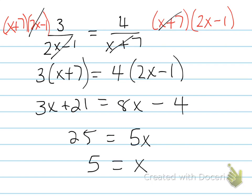So that's the solution. You can also state your non-permissible values: x cannot be negative 7 and x cannot be a half. But we know x is 5, so do we really need to state them? Thank you very much.